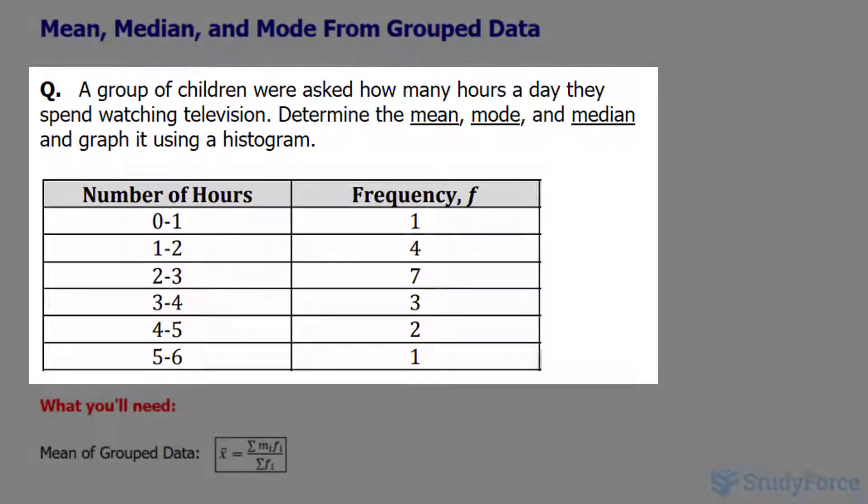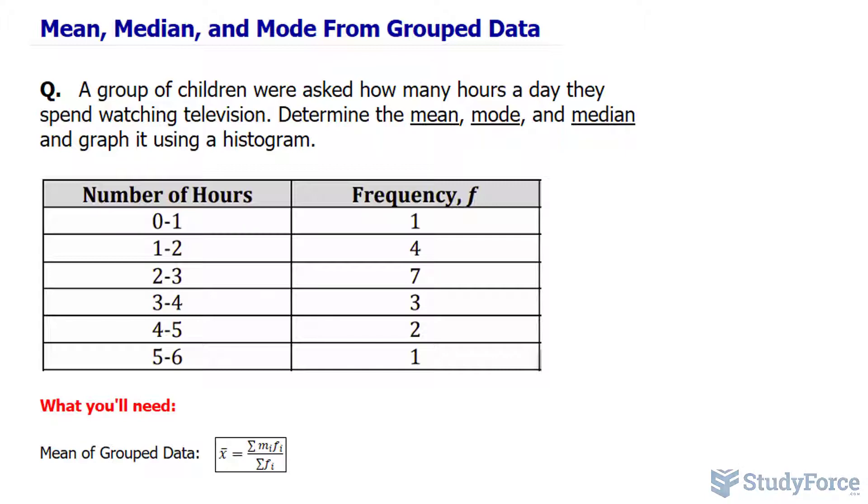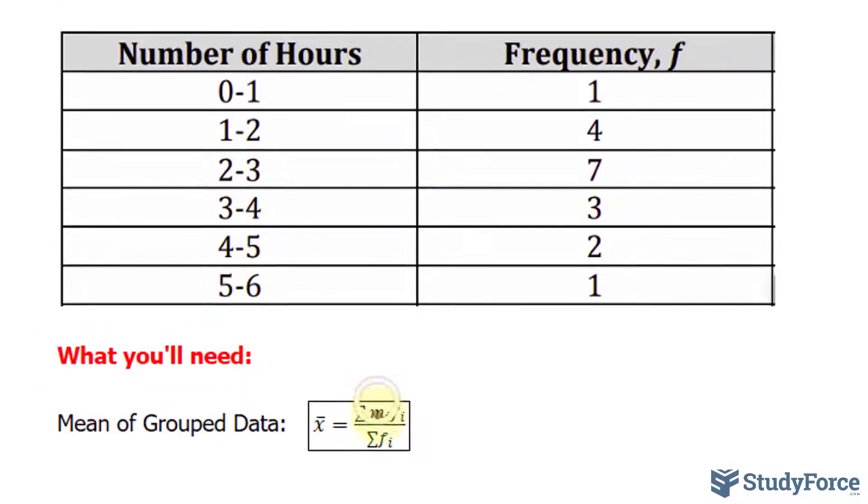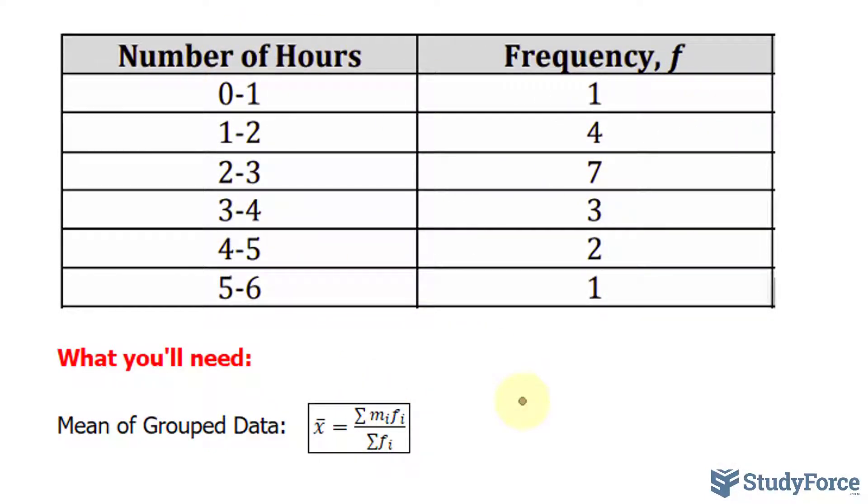We'll start with mean. In order to find the mean of grouped data from a frequency table like this one, you have to use the formula shown underneath, where x bar, which represents the mean, is equal to the sum of the midpoint of each of these rows multiplied to the frequency divided by the sum of the frequencies.